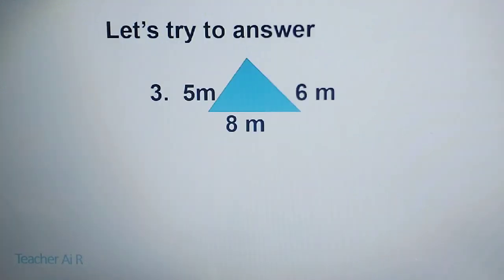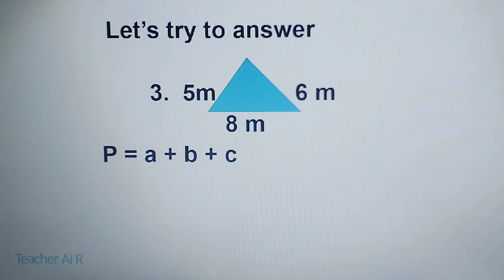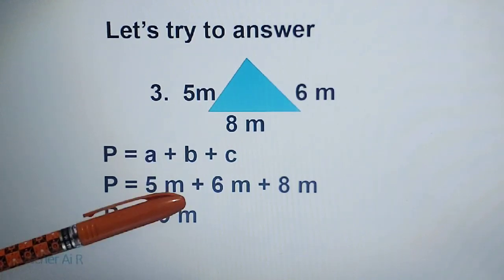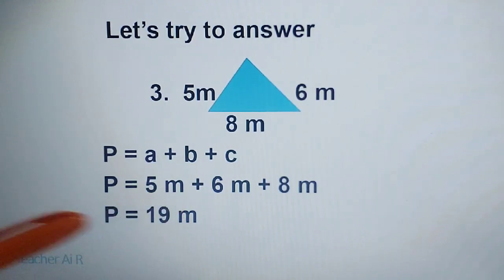Next, for the triangle, we have 5 plus 6 plus 8. Just add all the sides: 5 plus 6 plus 8 equals 19. Always remember to write the unit.